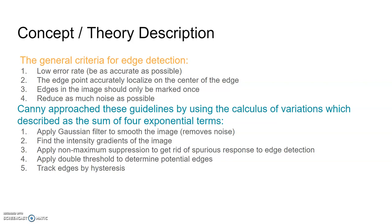In the five-step process: one, apply a Gaussian filter to smooth out the image, which reduces noise; two, find the intensity gradients of the image, which basically asks for the angle of each pixel; three, apply non-maximum suppression to get rid of all spurious response to edge detection; four, apply a double threshold to determine potential edges; and five, track edges by hysteresis.